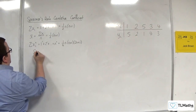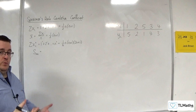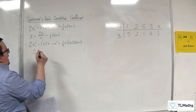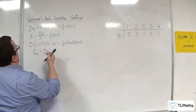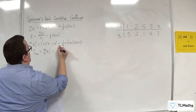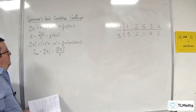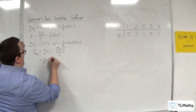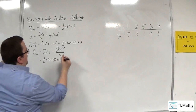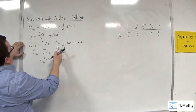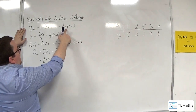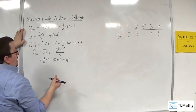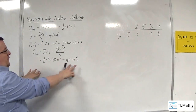So the Sₓₓ formula given to us in the formula booklet: Sₓₓ is the sum of Xᵢ² take away the sum of Xᵢ all squared, divided by N. So we've got ⅙N(N+1)(2N+1), take away — since the sum of Xᵢ is ½N(N+1), squaring that gives ¼N²(N+1)², and dividing by N gives ¼N(N+1)². So this is Sₓₓ.